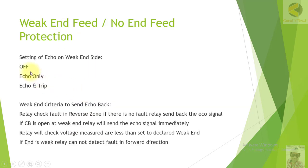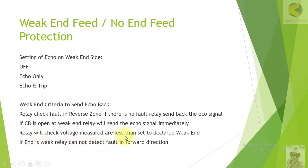The ECO function can be switched on or off. We can set ECO-only, or we can set echo and trip. The weak-end criteria is to send ECO back: the relay checks for a fault in the forward zone; if there is no fault it will send back the ECO signal. Alternatively, as per the setting, it can trip the local breaker and send ECO back. Another function: if the circuit breaker at the weak-end relay is open, the relay will send ECO signal immediately without performing any further checks.